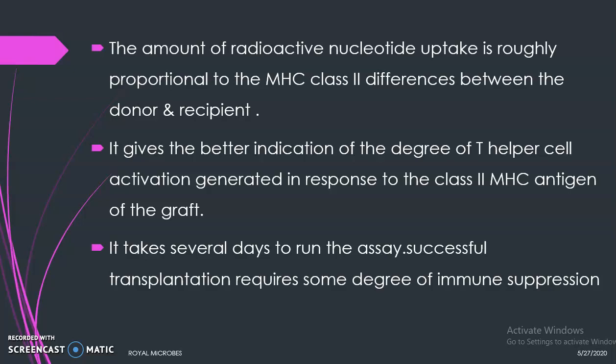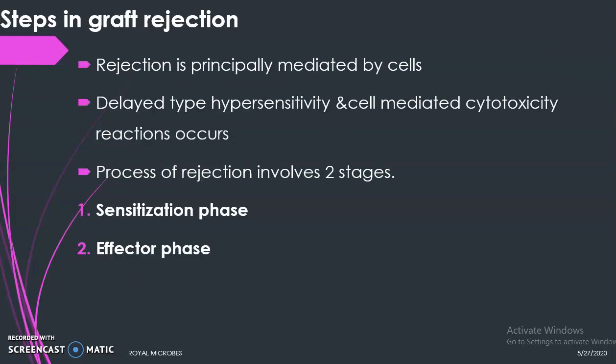The MLR gives a better indication of the degree of T helper cell activation generated in response to class 2 MHC antigens of the graft. However, one drawback is that it takes several days to run the assay. Even after ABO blood grouping and HLA typing, the graft can still be rejected. For complete or successful transplantation, some degree of immunosuppression is also required, employed in the form of immunosuppressive drugs given to the recipient.